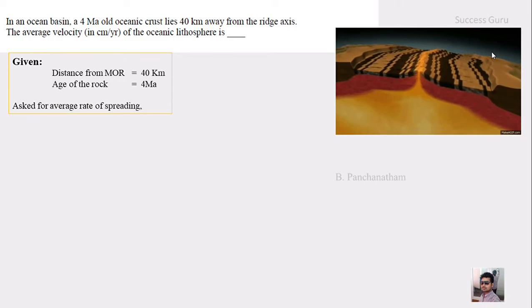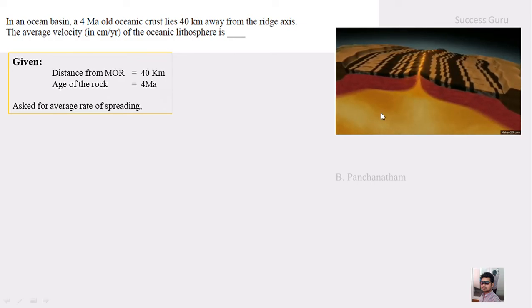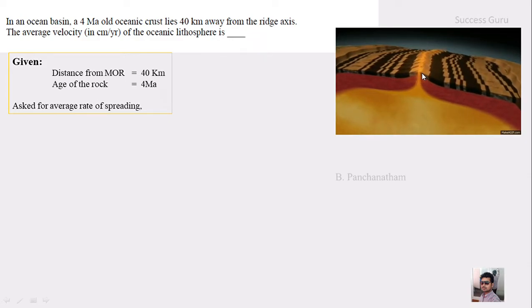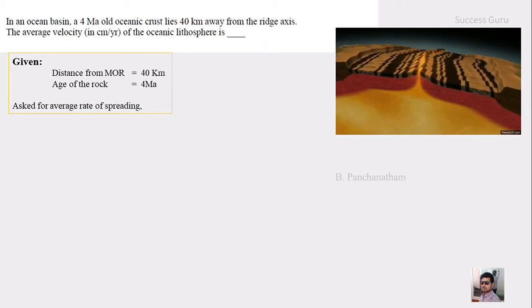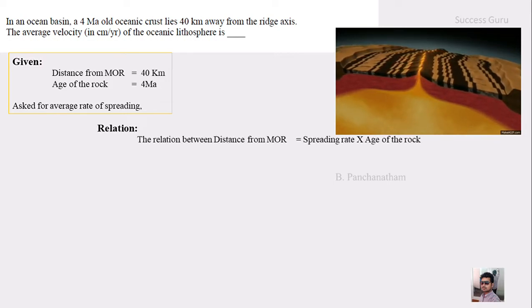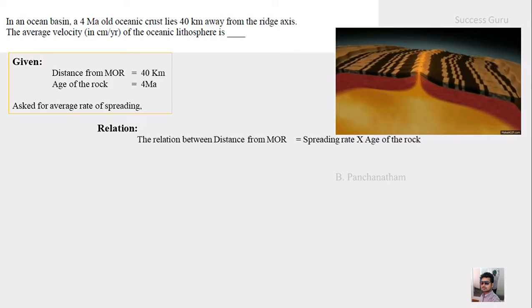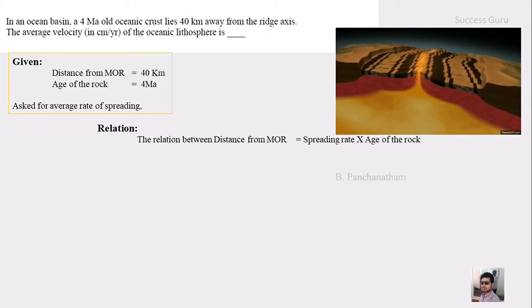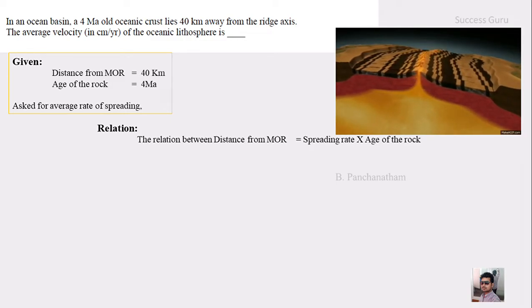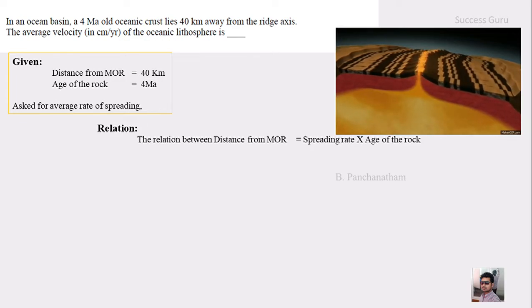So this is a mid oceanic ridge setup where a new oceanic crust forms here and that will move away from this point at a certain speed. So we should understand the relation between the distance, the age and the spreading rate. And the relation is that the distance from the mid oceanic ridge is equal to the spreading rate times the age. So if the spreading rate is 1 meter per day and if a rock of age is 10 years is lying away, so the distance will be 10 meters. That will be the relationship.